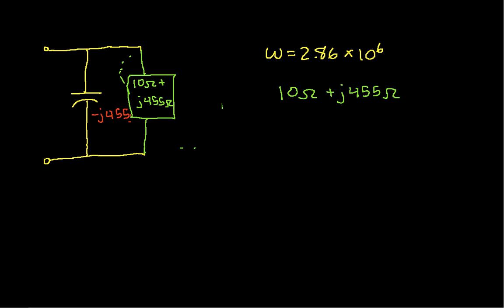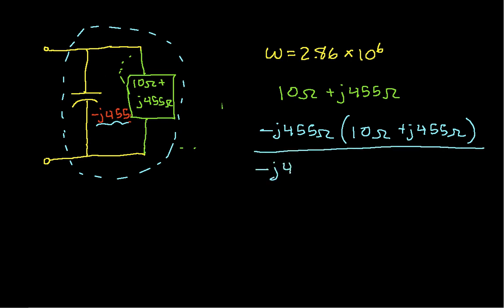So the next step is to notice that we now have just a parallel combination of the capacitor and this impedance that I just computed. So the impedance of the parallel combination is going to be minus j455 ohms times 10 ohms plus j455 ohms, divided by minus j455 ohms plus 10 ohms plus j455 ohms. This guy here gives us this, and in the denominator, this guy here gives us this. So now all I need to do is actually compute what this is, and for this I will use Wolfram Alpha.